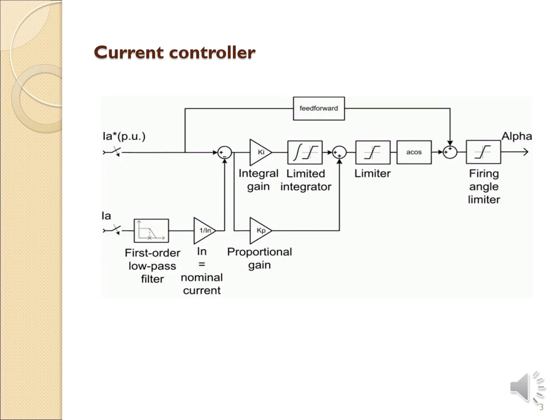This is the structure of the current controller, which uses a feedback control structure. The controller consists of a limited integrator with a limiter, a firing angle limiter, a proportional gain controller, a first-order low-pass filter, and a feedback control mechanism. The actual current is properly identified and fed back to be analyzed.